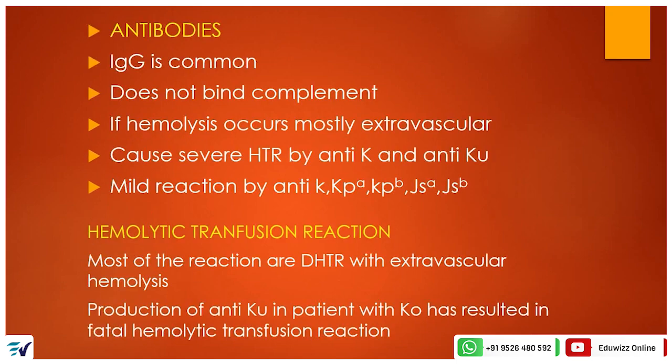Kell blood group antibodies are mostly IgG; IgM is very rare. Because they are IgG, they do not bind complement well. Since complement is not binding, hemolysis is extravascular. These antibodies can cause severe hemolytic disease reactions — anti-K and anti-k can cause severe reactions, while anti-KpA, anti-KpB, anti-JsA, and anti-JsB cause mild reactions.